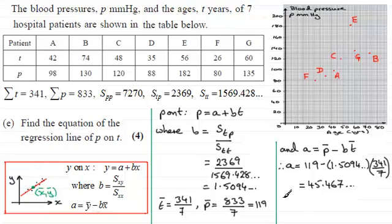So when it comes to working out that equation of P on T, that equation is going to be P equals A. Now I'm going to round this to three significant figures. So that's going to be 45.5.